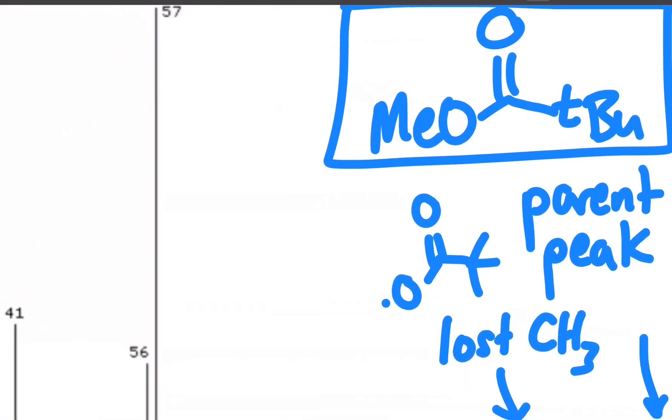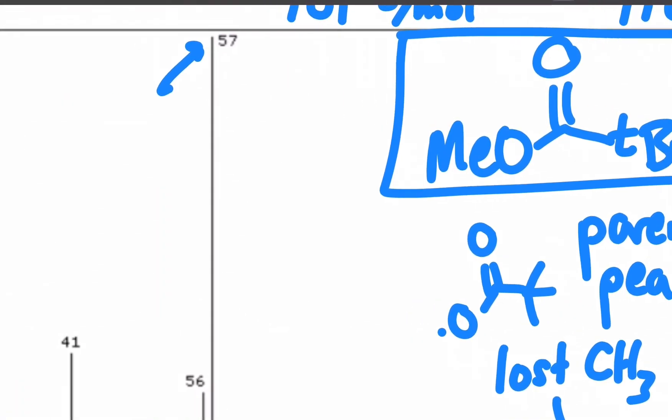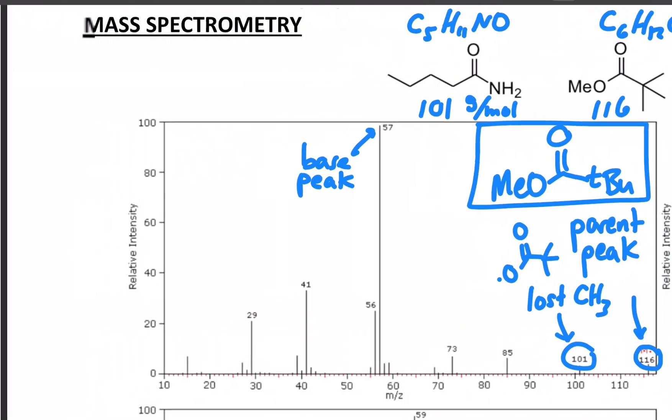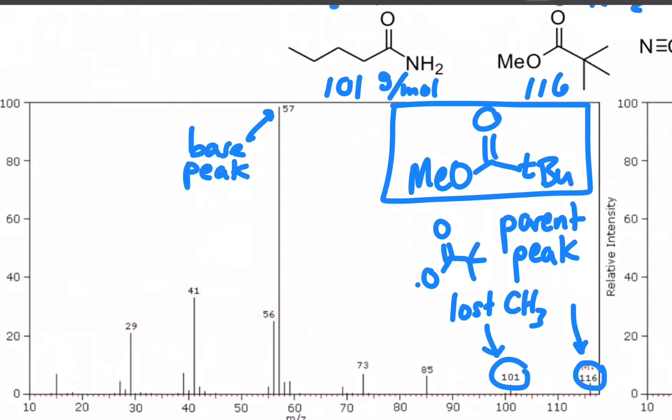Likewise, if I look at this really tall peak, the tallest peak, by the way, is called the base peak. And that's just the one that shows up in the most abundance. So it's given a value of 100% intensity and everything else is just relative to that. But it has no bearing, for our purposes for now, on how significant or what the structure is, just how the instrument works.